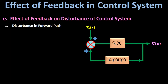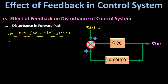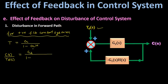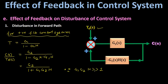Now the input to this system is the disturbance signal T(s). This is a positive feedback control system. For a positive feedback system, the overall transfer function T equals forward path gain G divided by 1 minus G·H. So the overall transfer function C(s)/T(s) equals G2(s) divided by 1 minus G2(s) times minus G1(s)·H(s).